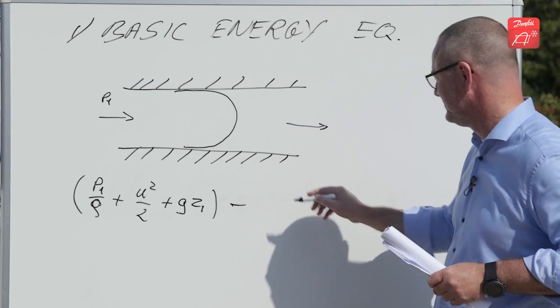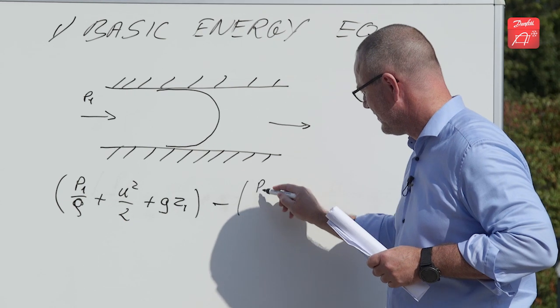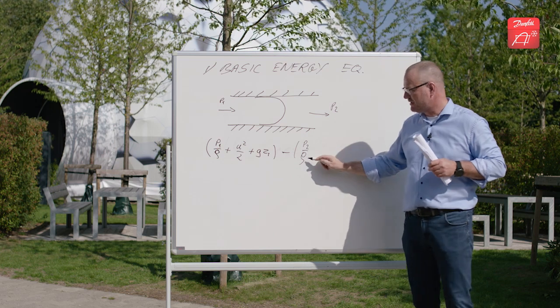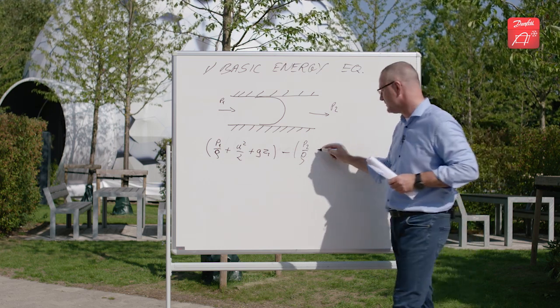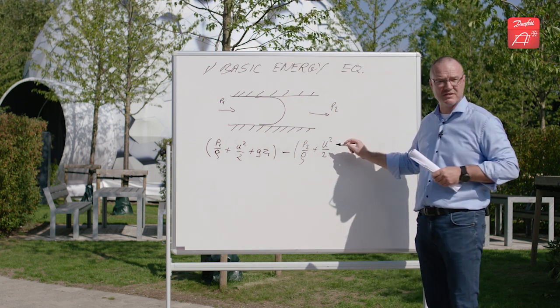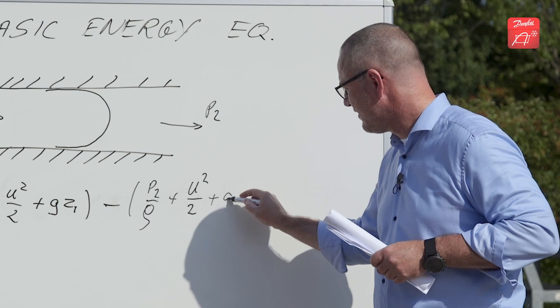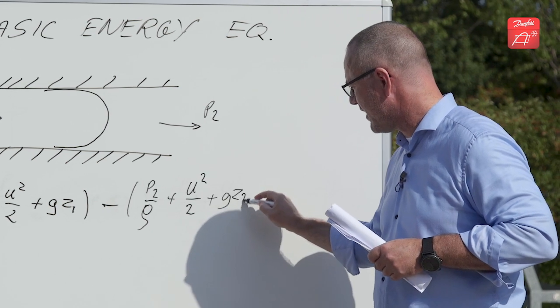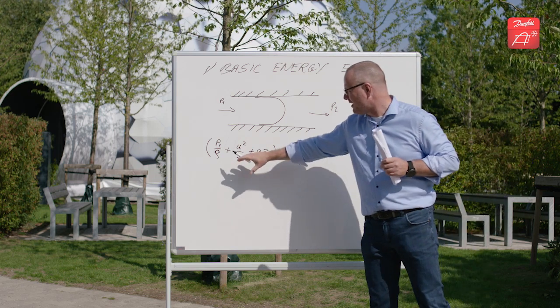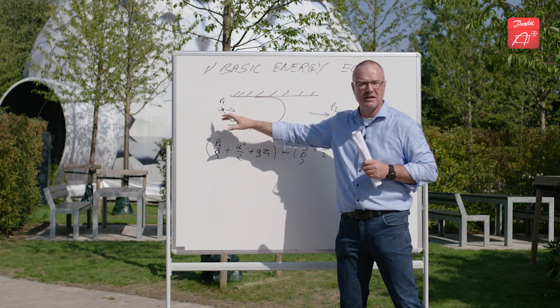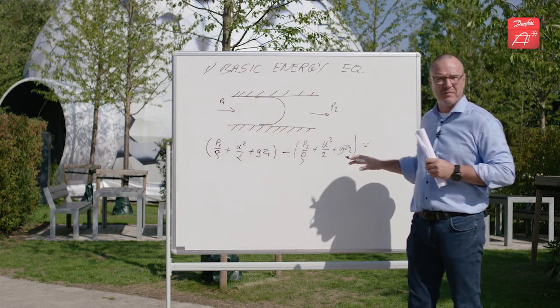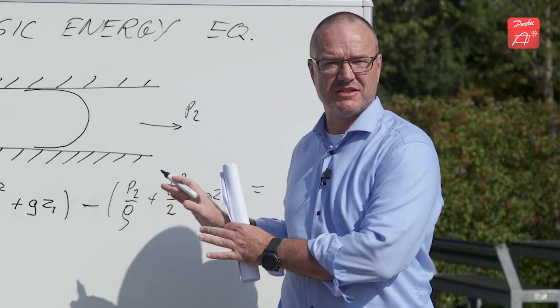Then we have what comes out. The density was constant because it was incompressible. We have the same velocity, and then we have the gravity times the outlet height. Now if everything that comes in equals everything that comes out, this equation might be equal to zero. But there's losses involved here.